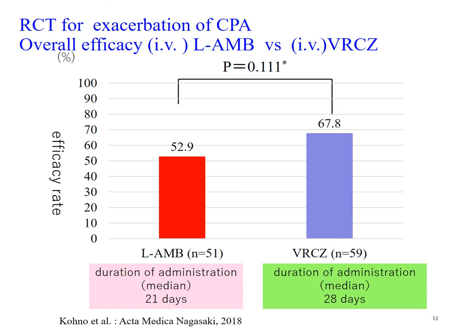This is our second randomized clinical trial for CPA using the same patient definition and the same endpoint. Overall efficacies were 52.9% for liposomal AMB and 67.9% for voriconazole. Although voriconazole looked more effective, there was no statistical difference. The difference between liposomal AMB and voriconazole was due to the safety profiles of these two antifungals.